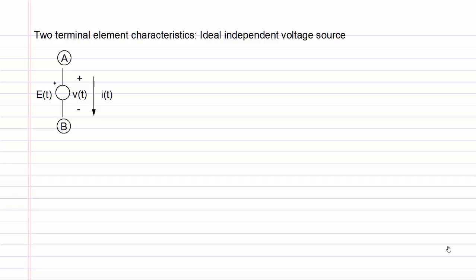The next two-terminal element we will study is an ideal independent voltage source. The symbol for the source consists of a circle with a plus sign written next to one end. The value of the source is E of t, written next to the source symbol. The voltage across the source is shown as V of t, and it is customary for the reference direction of V of t to match the same polarity as the voltage source.